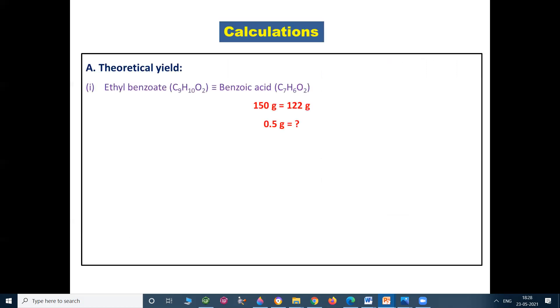Calculations. Let us calculate the theoretical yield. Ethyl benzoate with molecular formula C9H10O2 will give benzoic acid C7H6O2. 150 g of ethyl benzoate will give 122 g of benzoic acid. Then 0.5 g of ethyl benzoate will give how much benzoic acid? Let us see by cross multiplication. 122 into 0.5 upon 150 gives 0.4 g and 0.4 g is the theoretical yield.